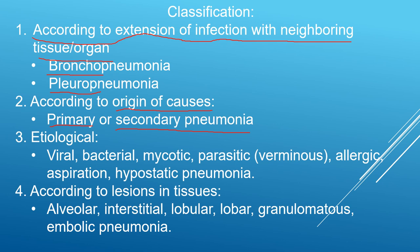The third type of classification is etiological. Virus infection causes viral pneumonia; bacterial causes lead to bacterial pneumonia; mycotic causes produce mycotic or fungal pneumonia; parasitic causes result in parasitic or verminous pneumonia. If the cause is allergic, it is allergic pneumonia; if the cause is aspiration, it is aspiration pneumonia; and if the animal lies down for a long time and blood accumulates gravitationally to the lower part, that is called hypostatic pneumonia.